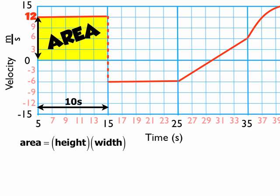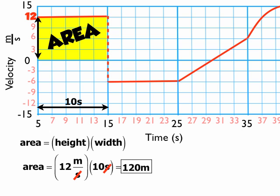So here's the area. The height times width. The height is 12 meters per second, the width is 10 seconds. So 12 meters per second times 10 seconds. The seconds divide out. That leaves me with the answer in meters. The final answer is 120 meters.